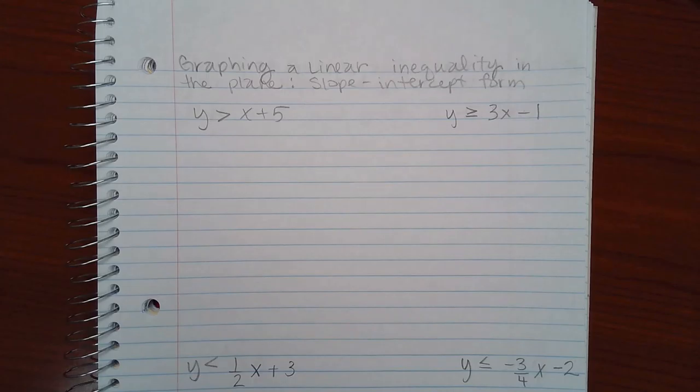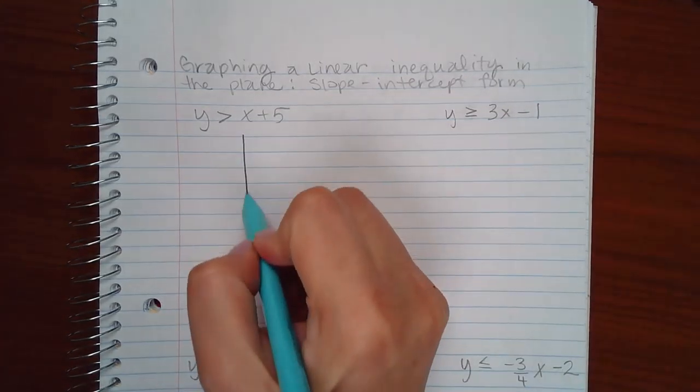So we still have to remember some of the key components, like if there is no bar in the inequality, then it is a dotted line. If there is a bar on the inequality, then it's a solid line. We also need to know which area to shade. So let's start off with this one.